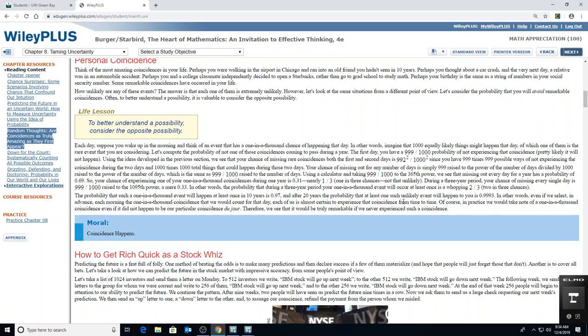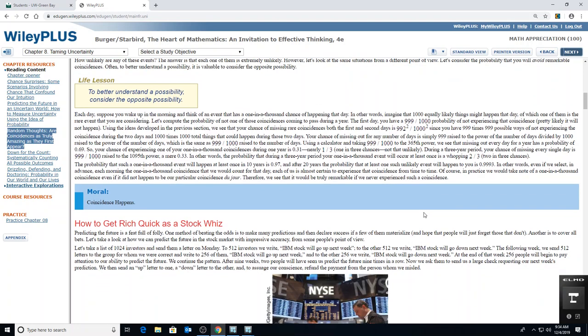In other words, even if we select in advance each morning a one-in-a-thousand coincidence that we would count for that day, each of us is almost certain to experience that coincidence from time to time. So randomness does happen, and that's what this section is about, randomness. We're supposed to expect the unexpected.